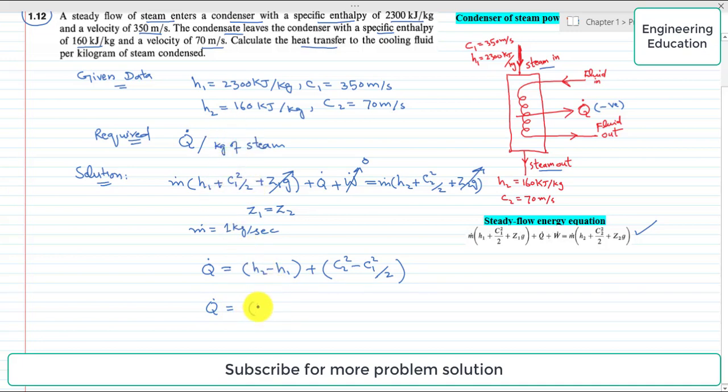So Q̇ is equal to the value of h₂ which is 160, and the value of h₁ is 2300 kilojoules per kilogram, plus the value of c₂ is 70 and the value of c₁ is 350, squared, divided by 2.